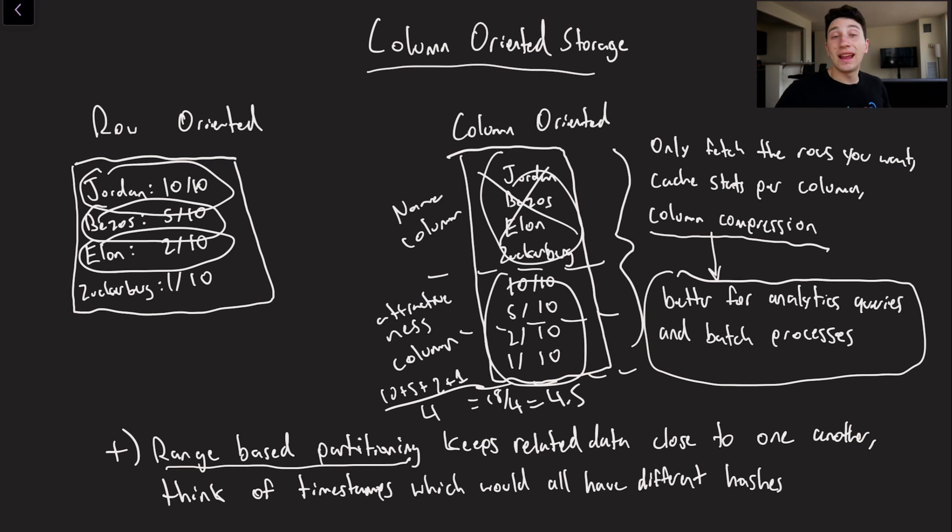This can be really nice because let's say we're handling timestamp data or something and we wanted to do a batch query that calculated like a trailing average of the last five data points. If we were using hash range based partitioning, all of our timestamps would probably be on different nodes organized pretty randomly.